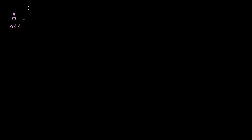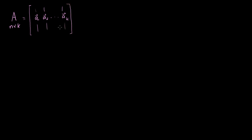Say I've got some matrix A. It's an n by k matrix — not just any n by k matrix. This matrix A has a bunch of columns that are all linearly independent. So A1, A2, all the way through Ak are linearly independent columns.